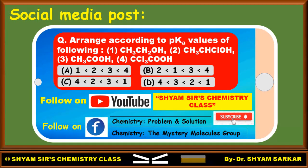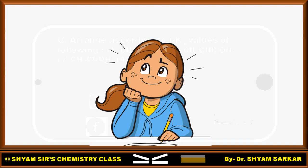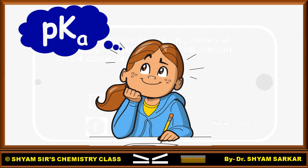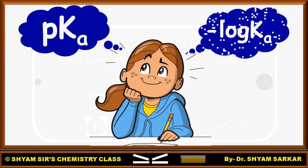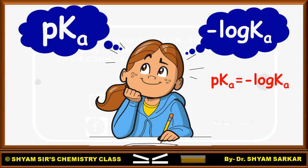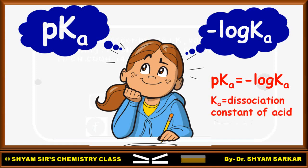Let us see which one is the correct answer and how to explain this kind of question in an exam. When you first see this question, the term pKa will automatically come to mind, because pKa equals minus log KA, where KA is the dissociation constant of the acid. Once KA increases, pKa decreases.